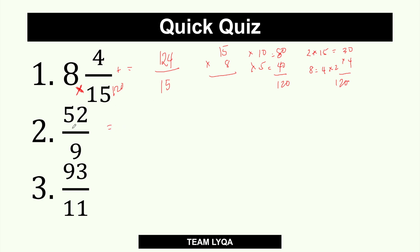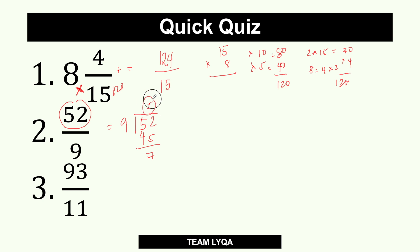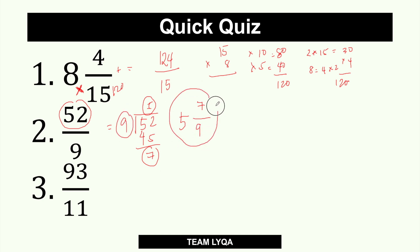Next, we have 52 over 9. This is an improper fraction because the top number is higher, so we convert it to a mixed number. Divide 52 by 9: that gives you 5, since 5 times 9 is 45, with a remainder of 7. Reconstruct the fraction: 5 is the whole number, 7 goes on top, and 9 stays as the denominator. The answer is 5 and 7 over 9.